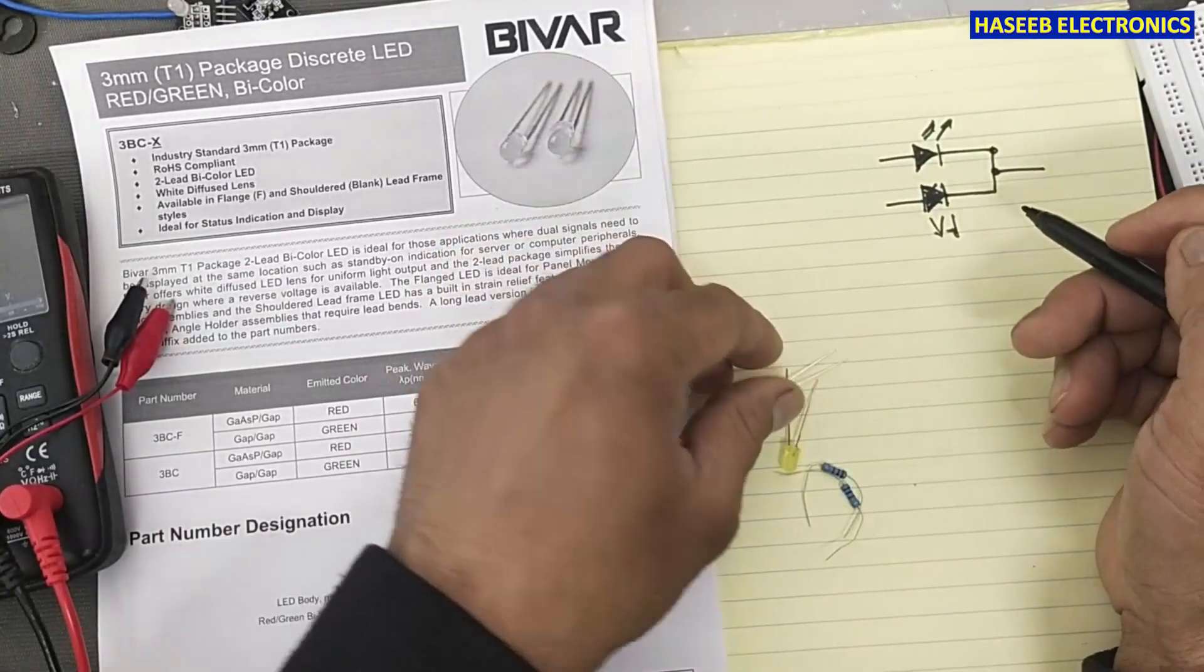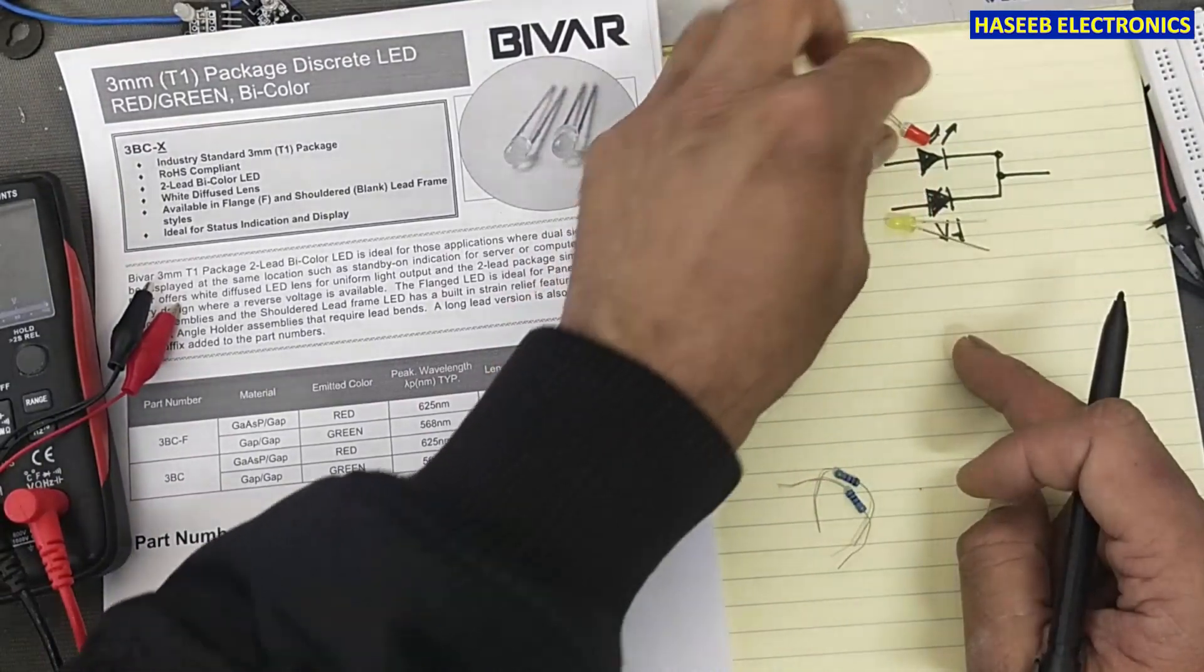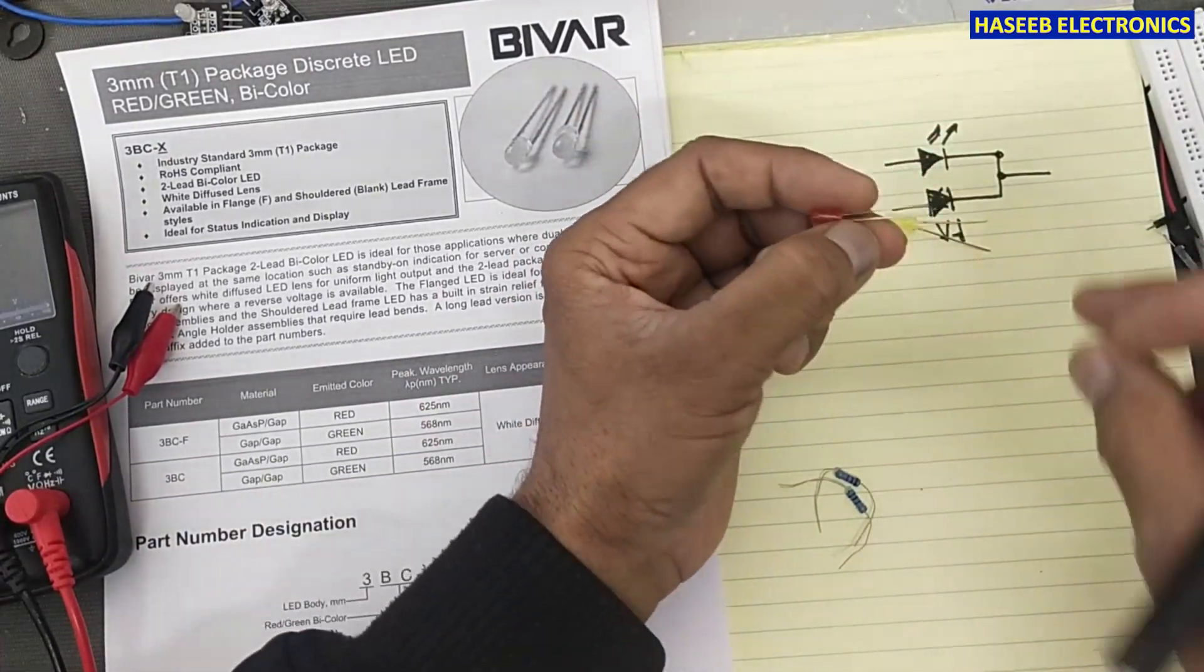These two LEDs, for example one is red and the second is yellow, so both cathodes, the small leads, will be combined together and we have two free anodes. These are two LEDs.